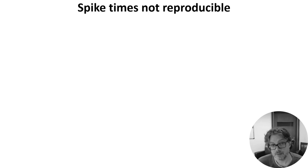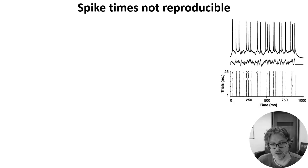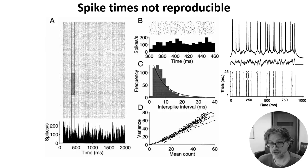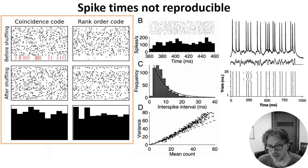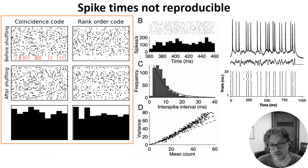Another argument against spike times being important is that they're often not reproducible, and so they couldn't be used as the basis of a neural code. We've seen before the result that if you inject a time-varying current into a neuron, you get reproducible spike times. But if you repeatedly show an animal the same stimulus, you often get spike times that are very different. Spike counts are also highly variable, but the argument is that these differences can be averaged out across the population. However, you wouldn't necessarily see obviously reproducible spike timing patterns.